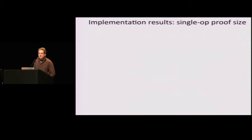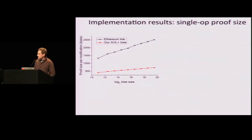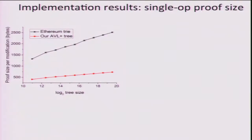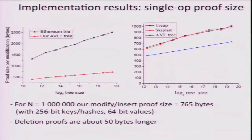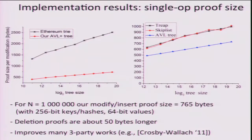I want to show some implementation results. The upper line shows the proof length for the Ethereum trie; the lower line is our proof length. On the y-axis is tree size on log scale, from about 1,000 to about a million. We are three times more efficient than Ethereum proofs in terms of length — and Ethereum does not give you the ability to compute the new root while we do. We implemented a bunch of other data structures — tries, skip lists, and others — and our line is the bottom one. With about a million keys, proof size is about 765 bytes at 128-bit security. Deletion proofs are about 50 bytes longer.